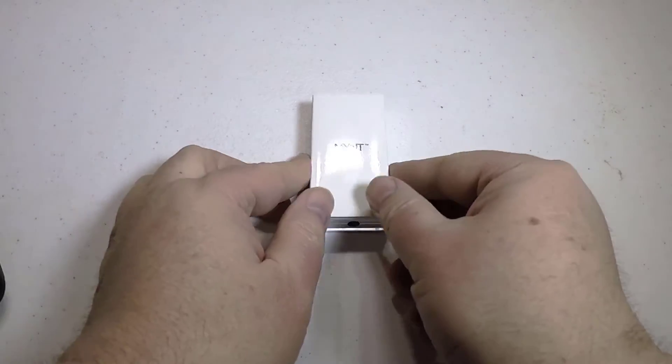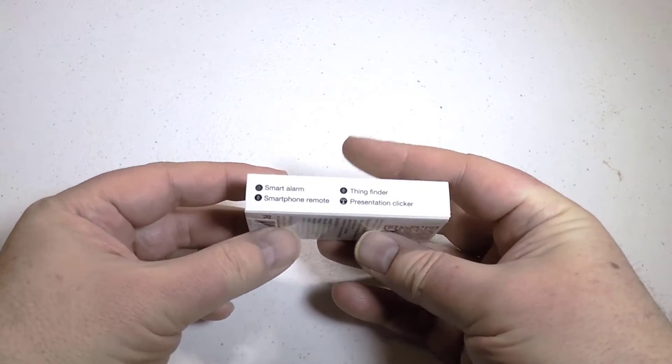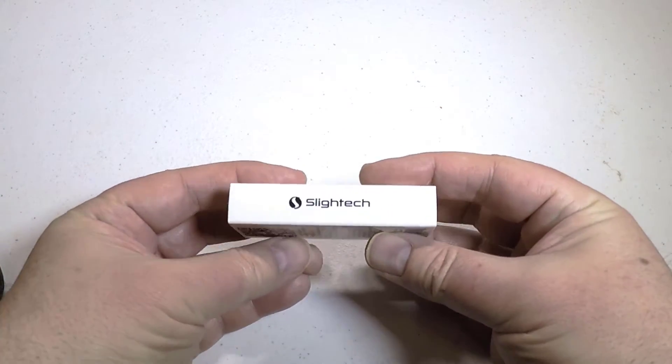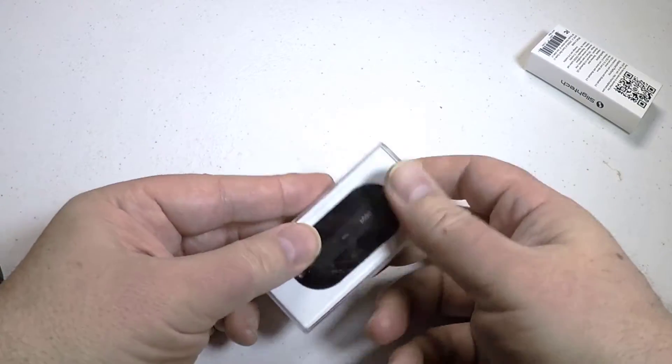Hi folks, Chris Voss here from thechrisvossshow.com. Coming up with a really cool product I've been enjoying - the Mint from slightech.com. It's basically a special Bluetooth device you can use on your keychains if you like.